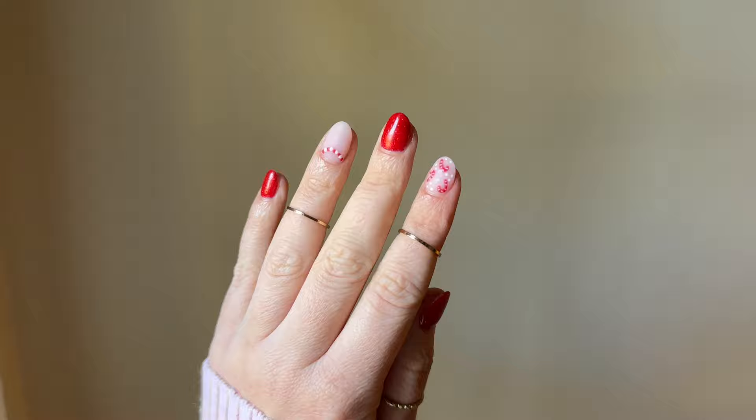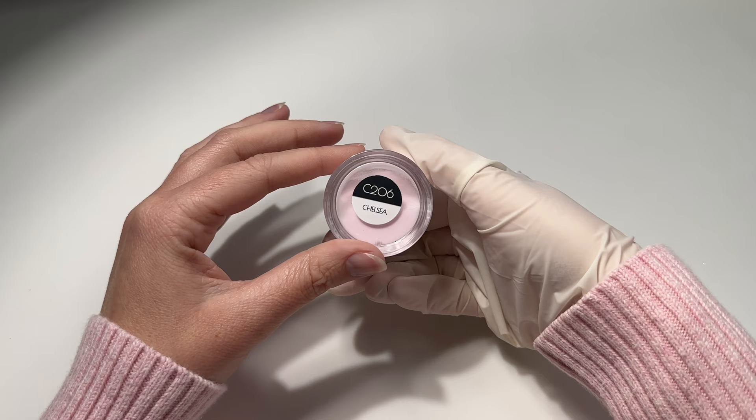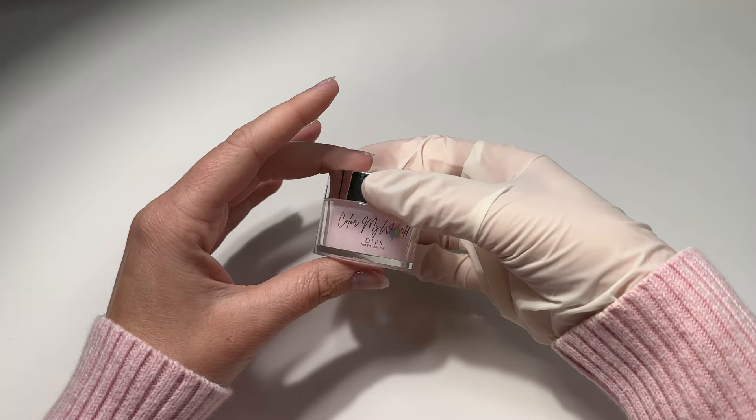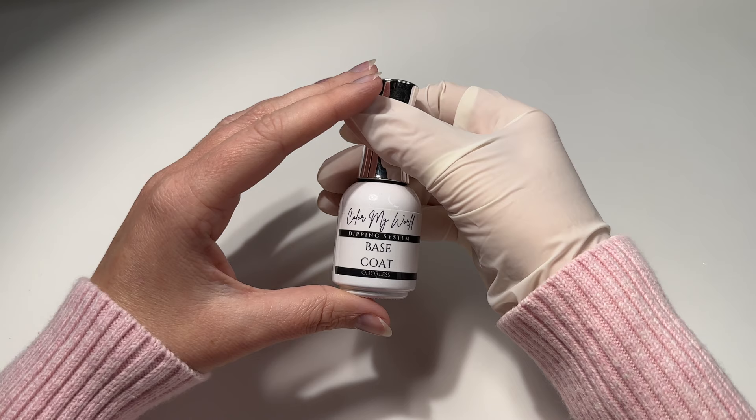I'll be using the shade Chelsea from Color My World Dips. This is part of the collection that we created together and I have exciting news - she has decided to keep Chelsea as part of her main line so it's not going anywhere. I'll also be using Color My World Dips odorless liquids. They're amazing. My allergies have been off the charts with this colder rainy weather so these really help me out.